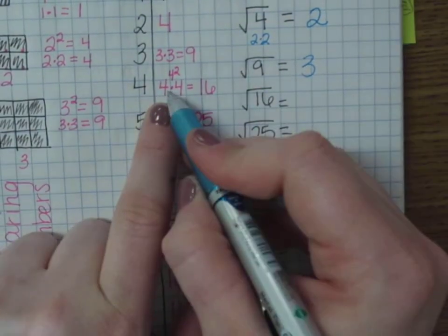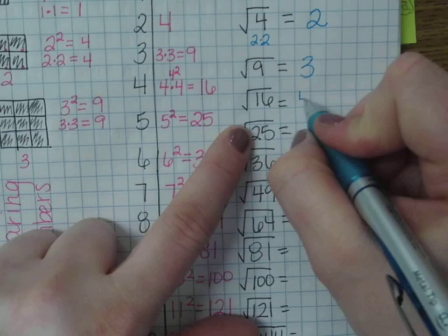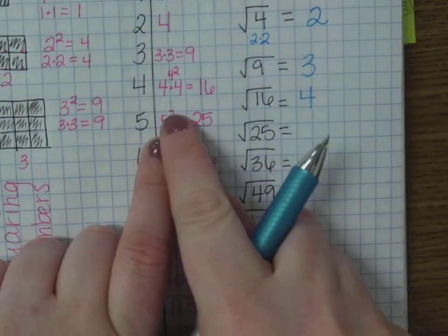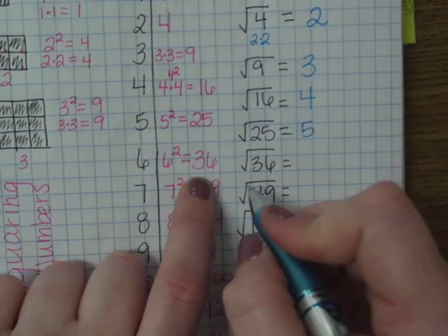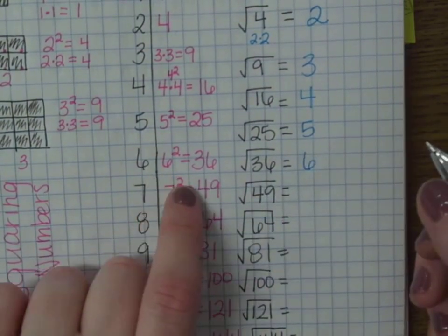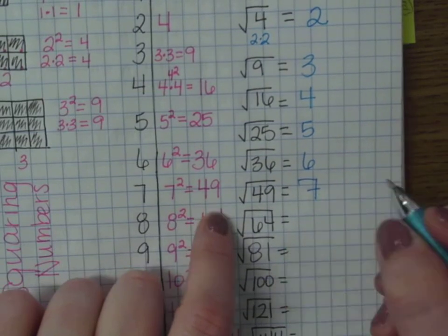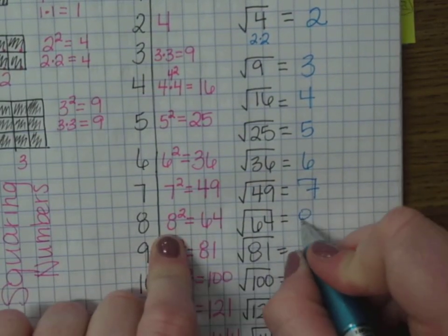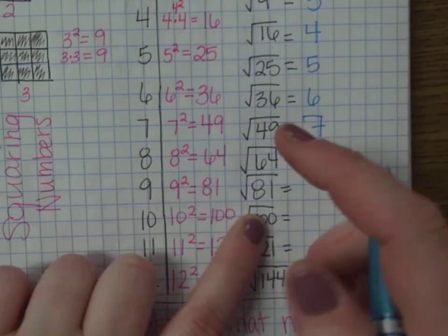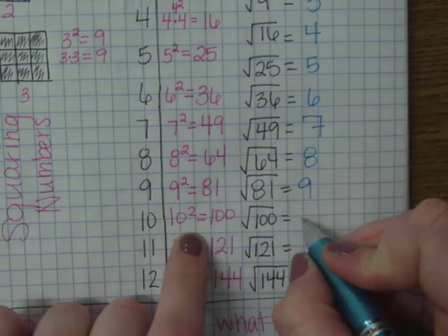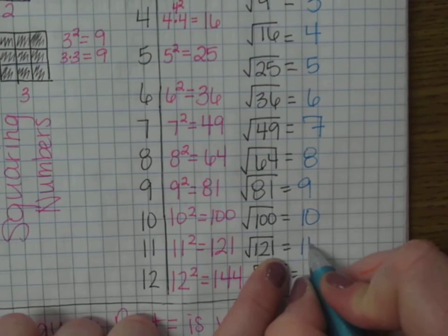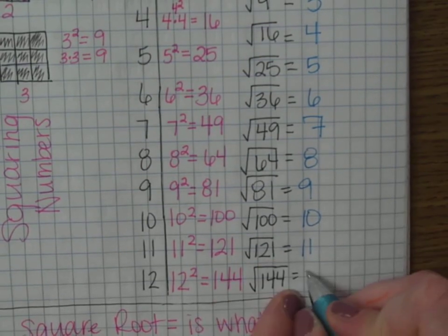So, the square root of 16 came from 4 times 4, so the answer would be 4. Square root of 25 came from 5 squared, or 5 would be your answer. Square root of 36 came from 6 times 6. Square root of 49 would be 7. Square root of 64 is 8. Square root of 81 came from 9 times 9. Square root of 100 is 10 times 10. Square root of 121 is 11. Square root of 144 is 12.